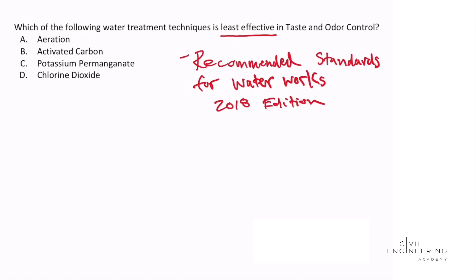I'll work through each option one by one. When I look up aeration, I find on page 80 that it is listed as effective in taste and odor control, so I cross that out. Activated carbon on page 94 is also a treatment technique for taste and odor control. Potassium permanganate is also on page 94, but the document notes that it sometimes leaves visible products of the reaction in the water — I make a note of that.